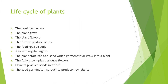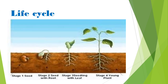The plant starts its life as a seed which germinates and grows into a plant. The fully grown plant produces flowers. The flower produces seeds in a fruit. The seed then germinates to produce new plants. This completes the cycle: seed → germination → plant → flower → fruit → seed → new life.